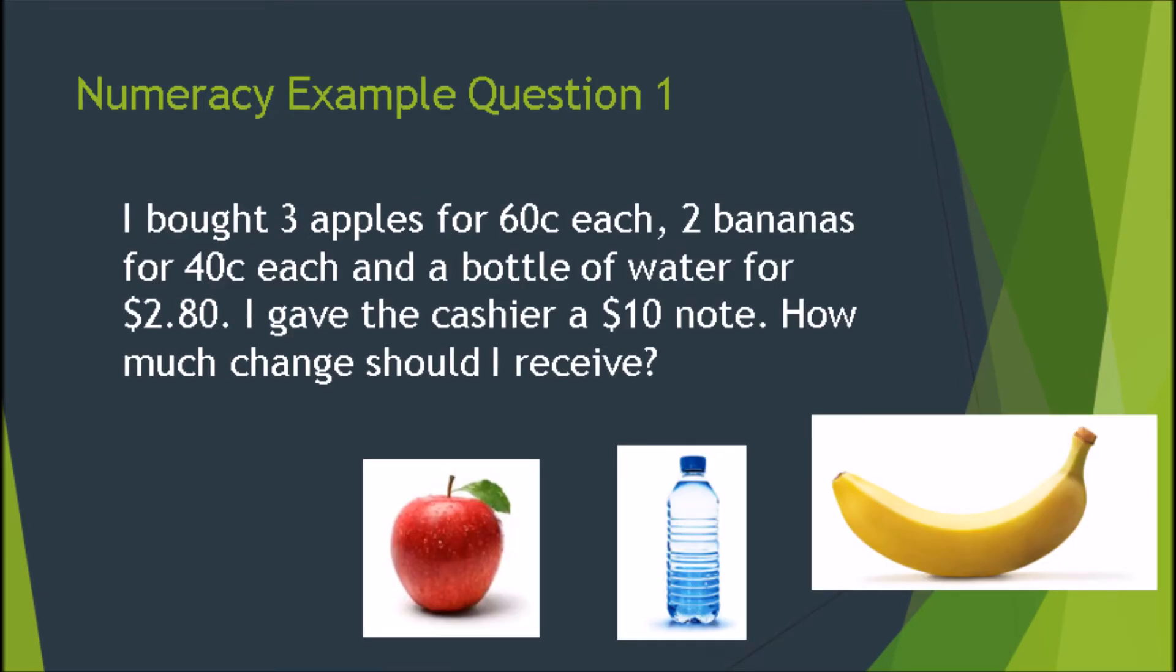Now we can turn that into a numeracy question. Using the same numbers we used in our first example, we can apply this into a real world context. So numeracy question 1 is: I bought 3 apples for 60 cents each, 2 bananas for 40 cents each, and a bottle of water for $2.80. I gave the cashier a $10 note, how much change would I receive?